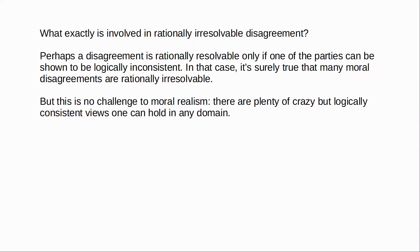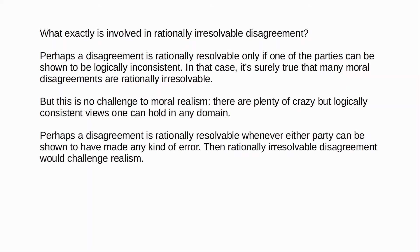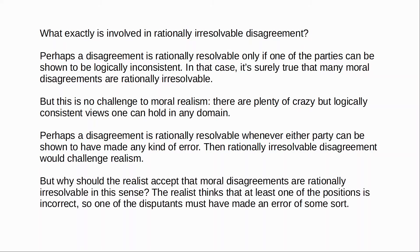On the other hand, suppose we have a very strict view of rational resolvability, so that any mistake at all counts as a rational flaw. A disagreement is rationally resolvable whenever either party can be shown to have made any kind of error. Well, in that case it seems that rationally irresolvable disagreement would challenge realism. But now the realist will object that moral disagreements are not rationally irresolvable — indeed, if literally any mistake at all counts as a rational flaw, then to say that moral disagreements are rationally irresolvable just begs the question against realism. Because for the realist, one of the positions is correct and the other isn't. So at least one of the parties to the debate must have made a mistake of some sort — and on this account the disagreement is rationally resolvable according to the realist.